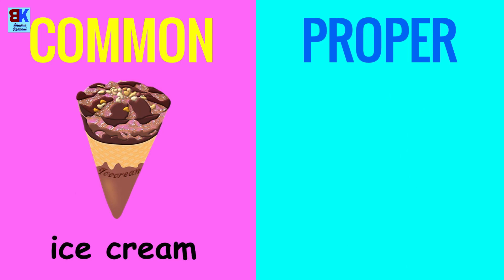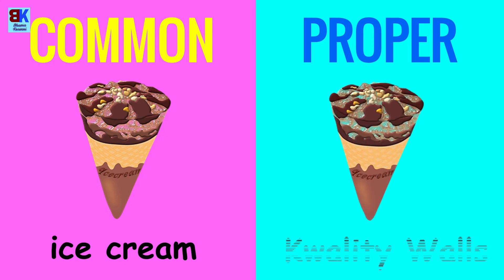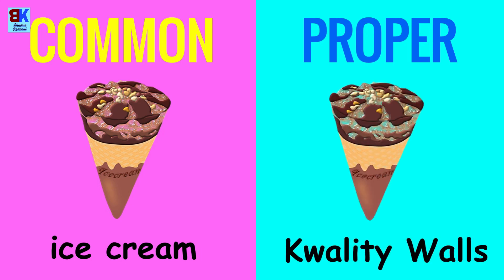Ice cream is a general name given to a thing, so it is a common noun. Quality Walls is a particular name of an ice cream. Hence, it is a proper noun.